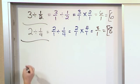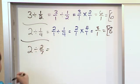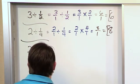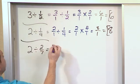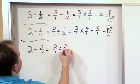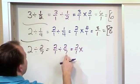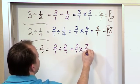What if we have the problem 2 divided by 2 sevenths? So same kind of thing. The 2 becomes 2 over 1 divided by 2 over 7. And then this changes to multiplication. Times, and then we flip over the second, 7 over 2.